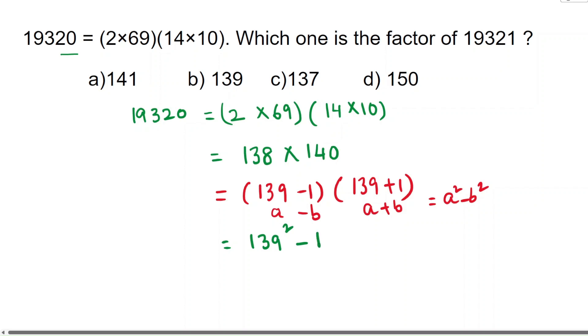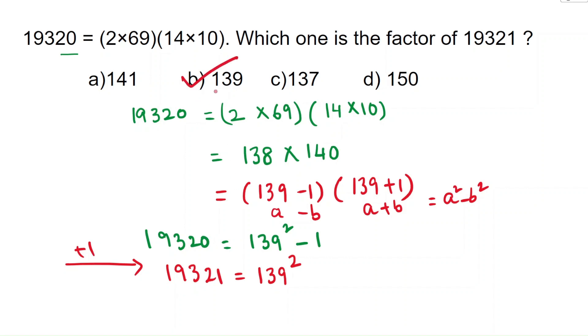Minus 1 squared means 1, so 19,320 equals 139 squared minus 1. If you add 1 on both sides, then 19,321 equals 139 squared. That means 139 is one of the factors. Option B is the answer.